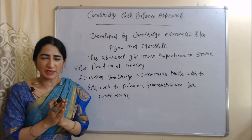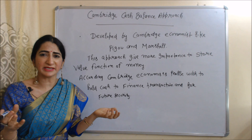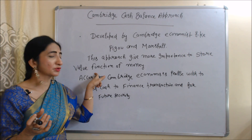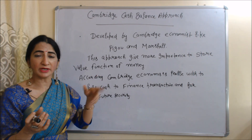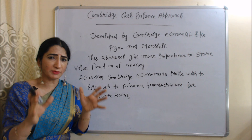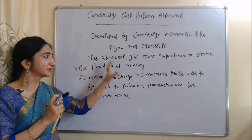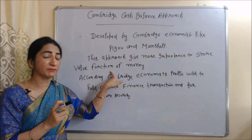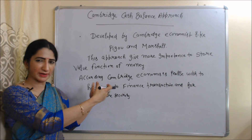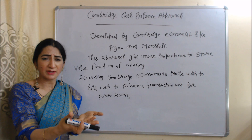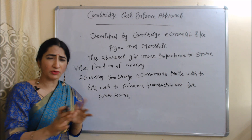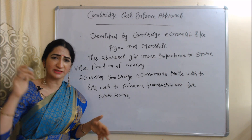Now we are going to talk about the Cambridge cash balance approach. This approach is given by Cambridge economists like Pigou and Marshall. This approach gives great importance to the store of value function of money. Unlike Fisher's theory, which treats money only as a medium of exchange, the Cambridge approach emphasizes the store of value function. According to Cambridge economists, people wish to hold cash for financing transactions and for future security — so this approach covers transaction motive and precautionary motive, but not speculative motive.